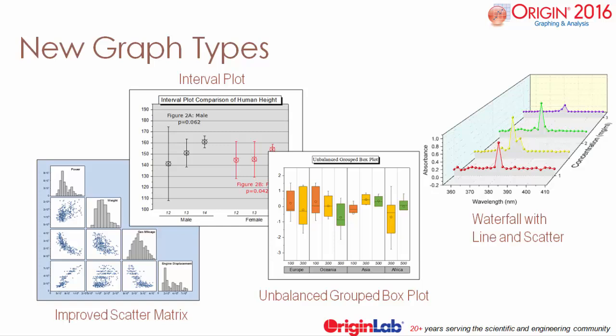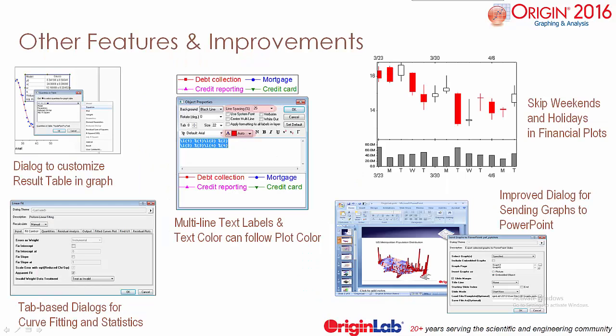These are just a handful of the new capabilities and improvements made in Origin 2016. Other features include a new dialog for customizing result tables and graphs, improved tab-based dialog for curve fitting and statistics, multi-line text labels, and an option for legend text color to follow plot color, financial plots allowing you to skip weekends and holidays, and an improved send graphs to PowerPoint tool.